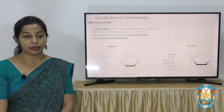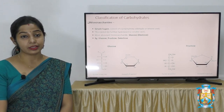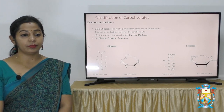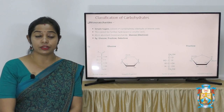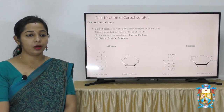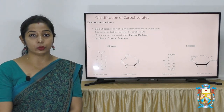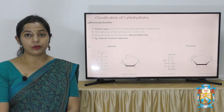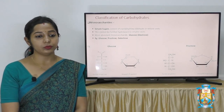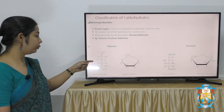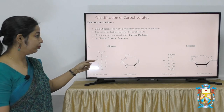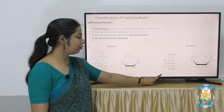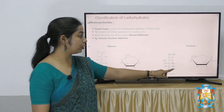Monosaccharides are also known as simple sugars. They consist of a polyhydroxyaldehyde or ketone unit and cannot be further hydrolyzed into smaller units. The most abundant monosaccharide in nature is glucose, which is also known as dextrose. Examples of monosaccharides are glucose, fructose and galactose. As you can see, this is the structure of glucose in Fischer projection and the cyclic form of glucose in Haworth projection. Fructose — this is the structure of fructose in Fischer projection and its cyclic form.